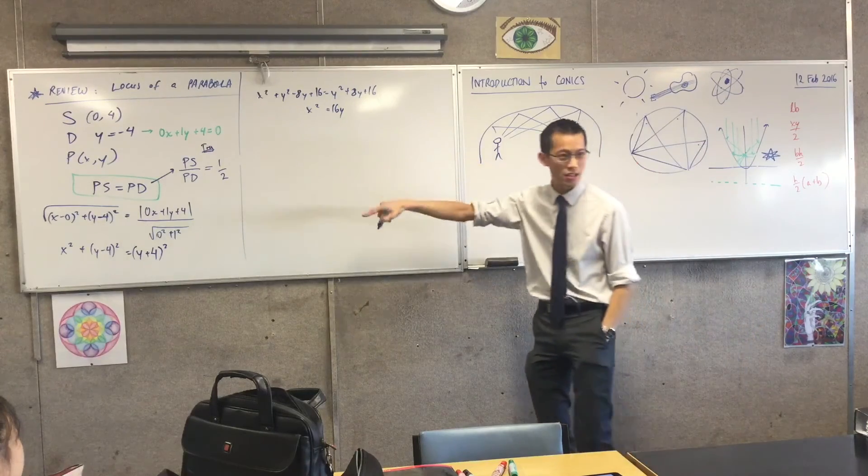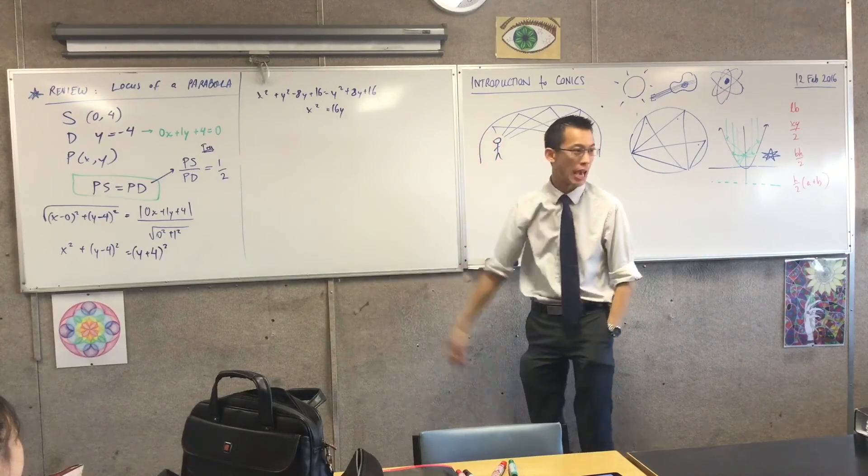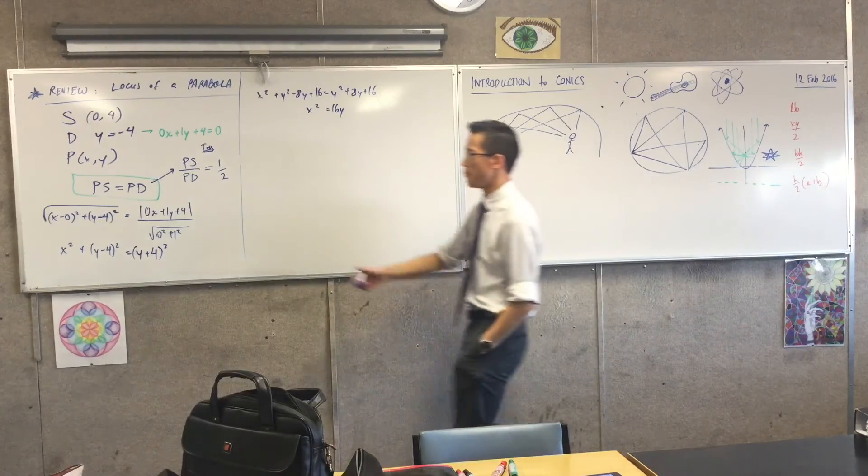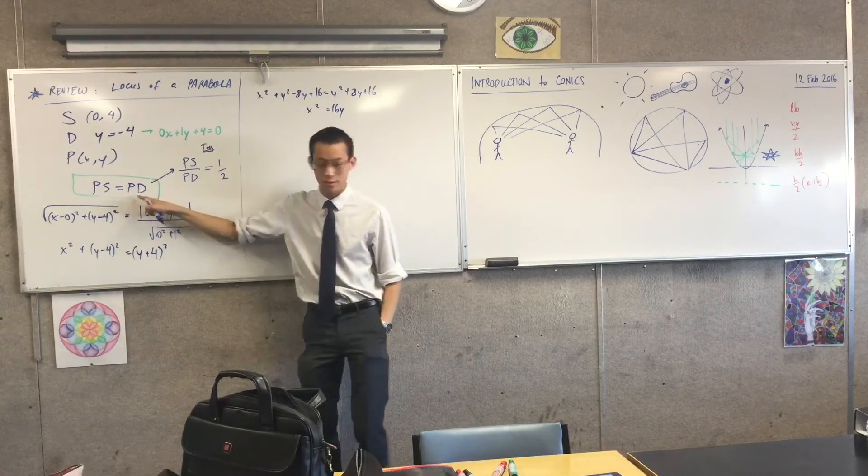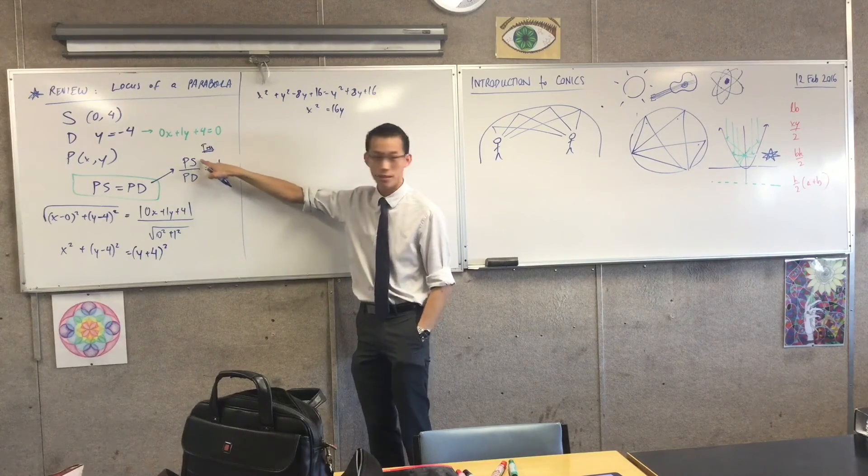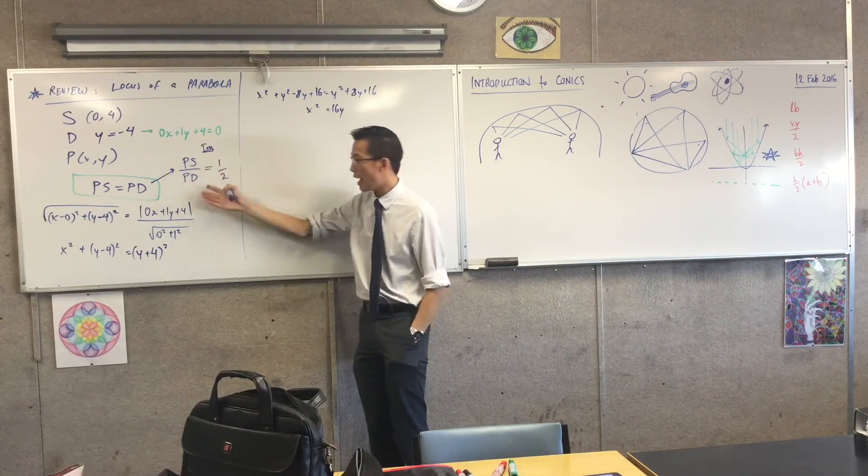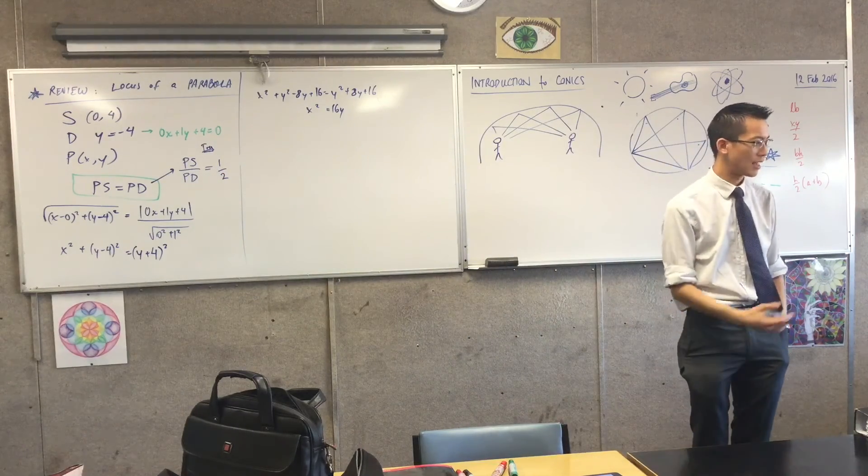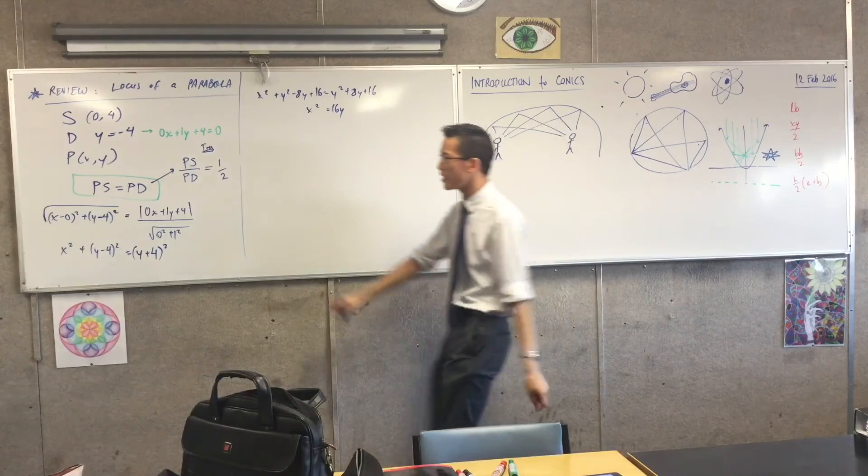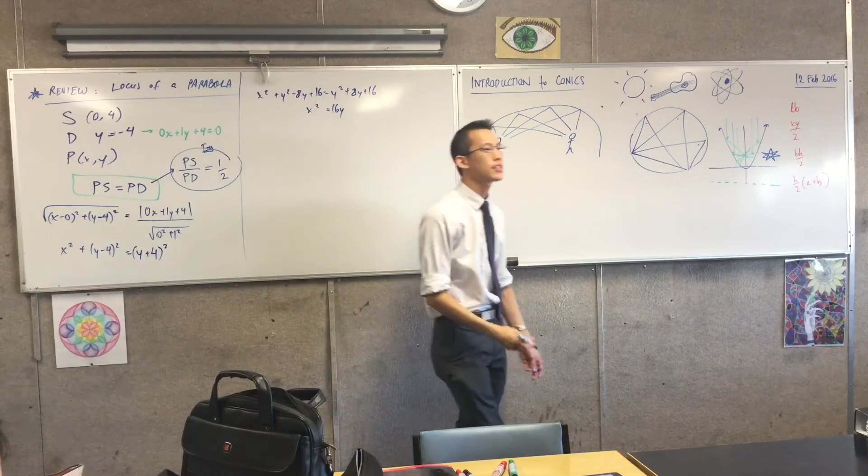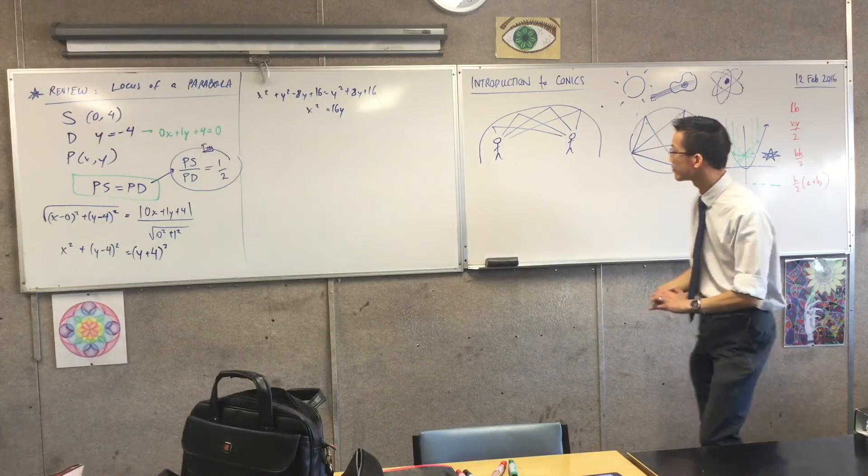What would happen to our ensuing equation and what kind of locus would we trace out if instead of being an equal distance, what if this distance was twice smaller than this distance? Algebraically you can still do this. Would you get out your pen, give it a crack? Instead of starting here, I'd like you to try starting here and see what ends up happening to the algebra. So PS/PD = 1/2.